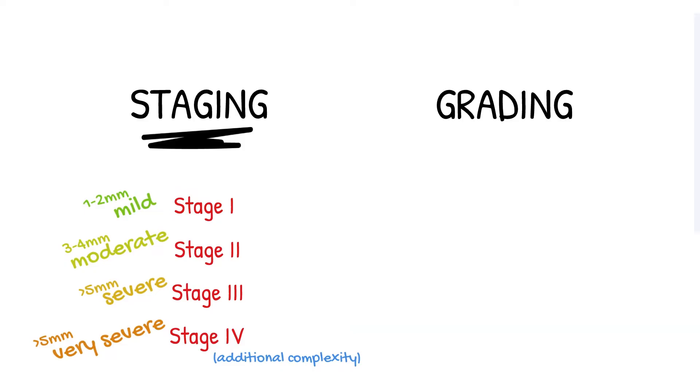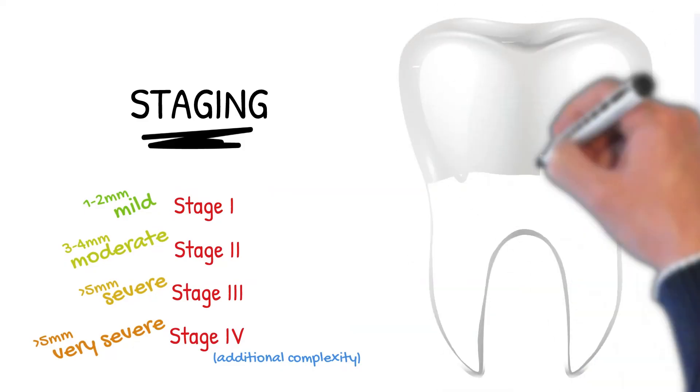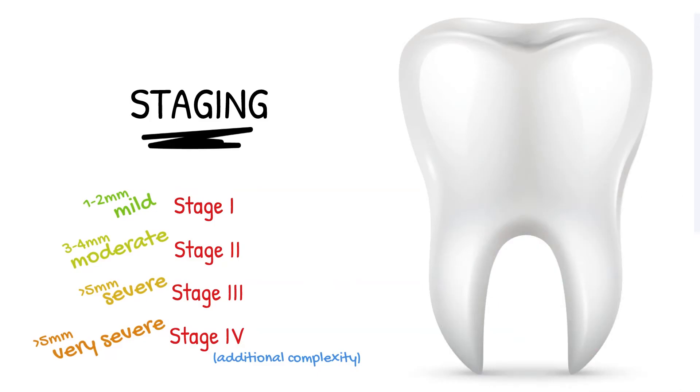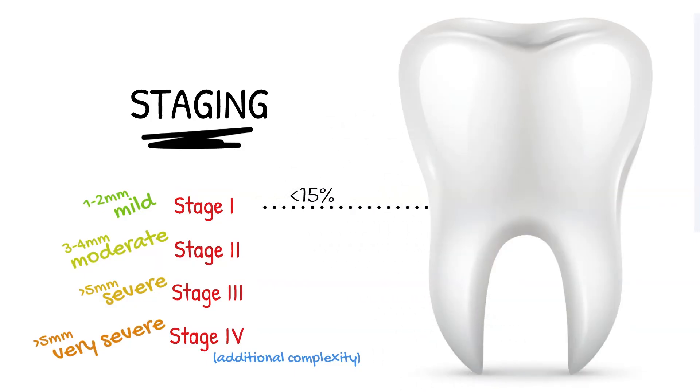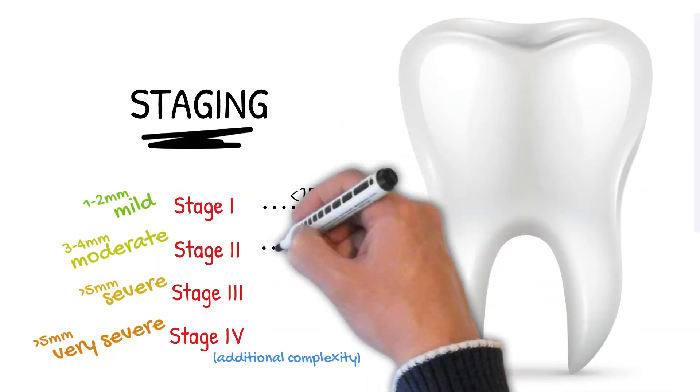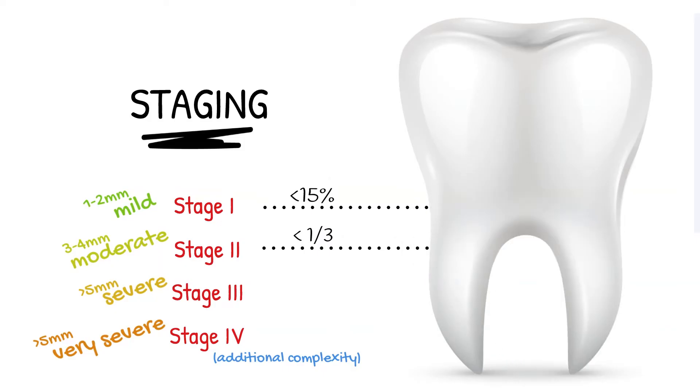The BSP recommends that staging can now be done based on radiographic bone loss rather than attachment loss for clinical ease. Stage one represents less than 15% bone loss. Stage two: bone loss limited to the coronal third of the root. Stage three: bone loss reaching the mid-third of the root. And stage four with bone loss reaching the apical third of the root.